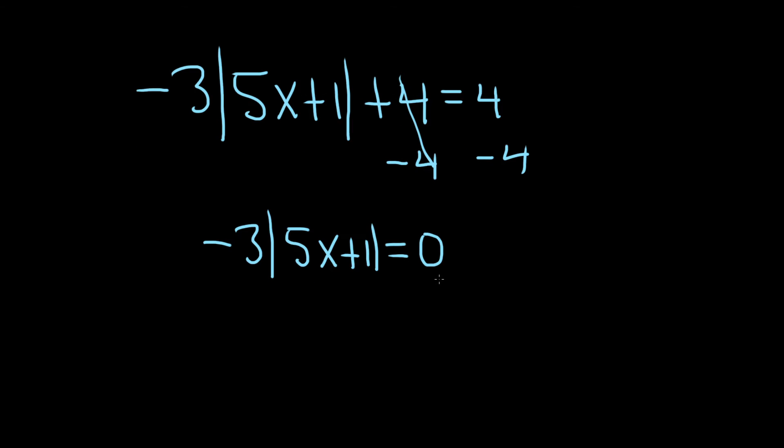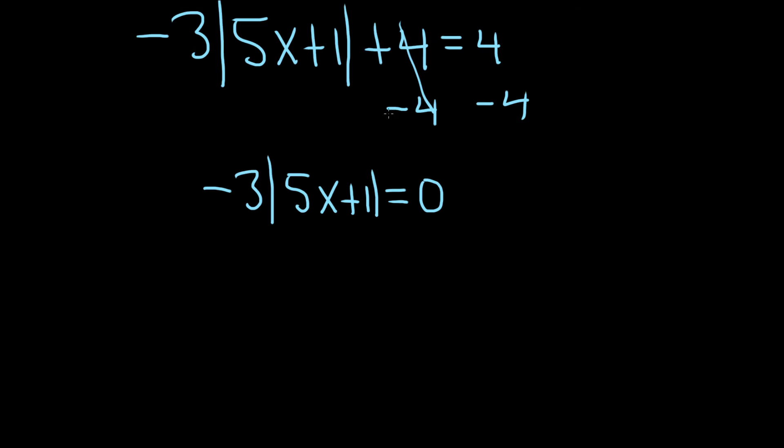We're almost there. We simply have to isolate this absolute value being multiplied by the negative 3. So what we can do now is divide both sides by negative 3. That leaves us with the absolute value of 5x plus 1, and 0 over negative 3 is just 0.